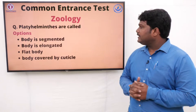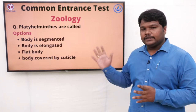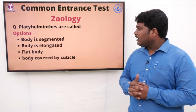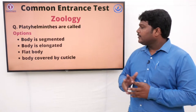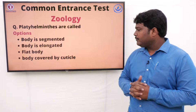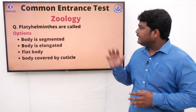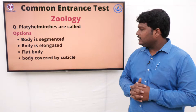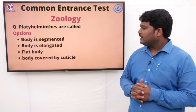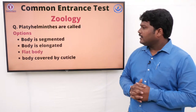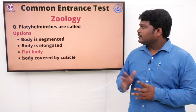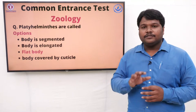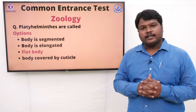Question 29: Platyhelminthes are called. Options: A) Body is segmented, B) Body is elongated, C) Flat body, D) Body covered by cuticle. The right answer is flat body. Platyhelminthes are called flat-bodied living organisms.